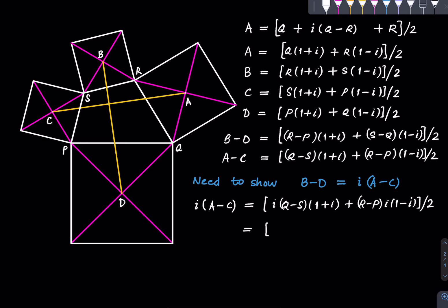So what we get is (R minus P) times (1 plus i) plus (Q minus S) times (1 minus i) divided by 2, which is (R minus P) times (1 plus i) plus (S minus Q)...